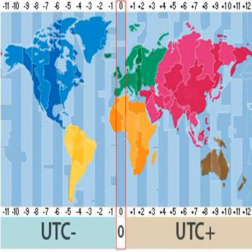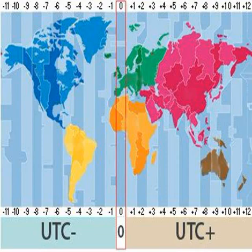The Network Time Protocol, designed to synchronize the clocks of computers over the internet, transmits time information from the UTC system. If only millisecond precision is needed, clients can obtain the current UTC from a number of official internet UTC servers. For sub-microsecond precision, clients can obtain the time from satellite signals.